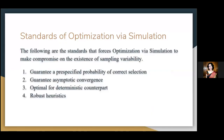Coming to the standards that process optimization by simulation to make compromise on the existence of sampling variability. The first standard: guarantee a pre-specified probability of correct selection, allowing an analyst to specify the desired chance of being right. Such algorithms typically require either that every possible design be simulated or that a strong functional relationship among the designs apply. The second standard: guarantee asymptotic convergence. There are many algorithms that guarantee convergence to the global optimal solution as the simulation effort increases. These guarantees are useful because they indicate that the algorithm tends to get to where the analyst wants it to go.